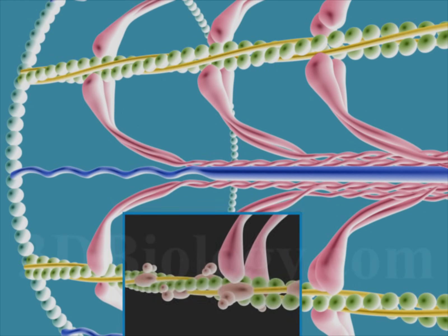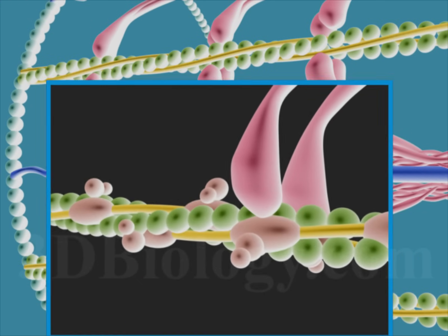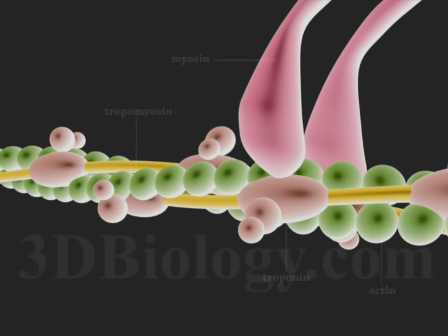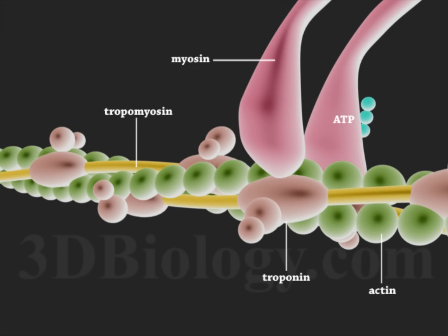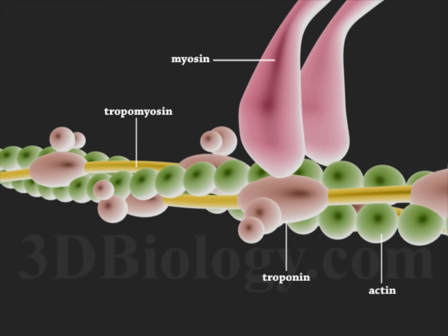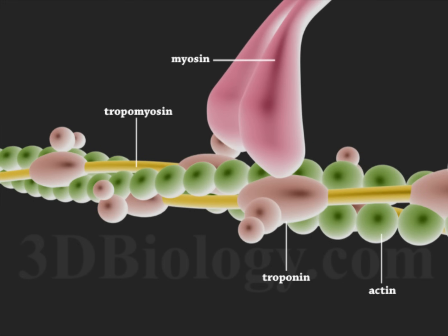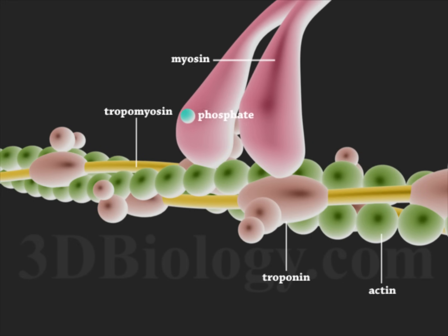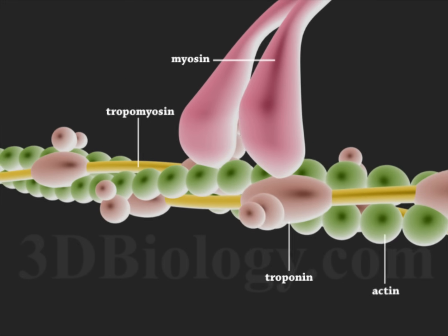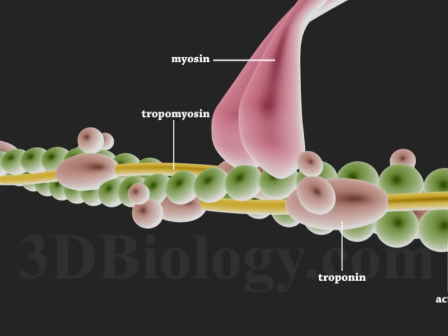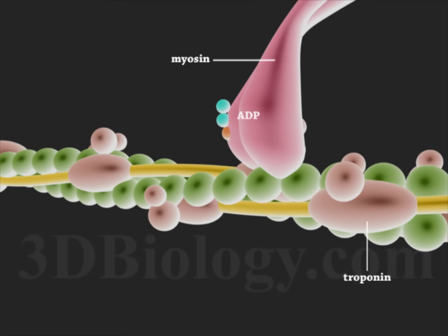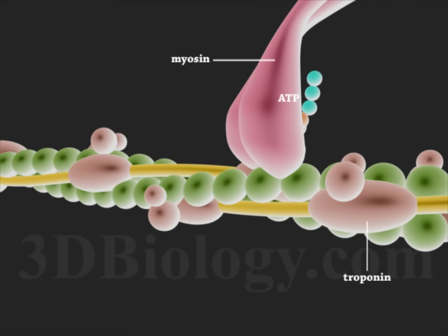Tropomyosin is part of the complex that prevents myosin from sliding along the thin filaments. A myosin head binds ATP and, as a result, detaches from the actin filament. It rebinds in a new position. Phosphate release triggers a power stroke that moves the actin filament. ADP disassociates, and the process is repeated.